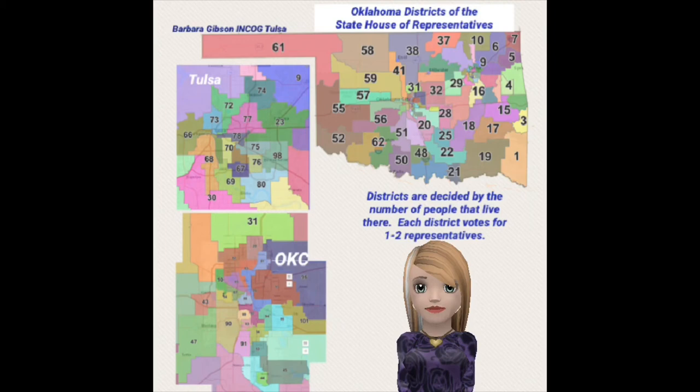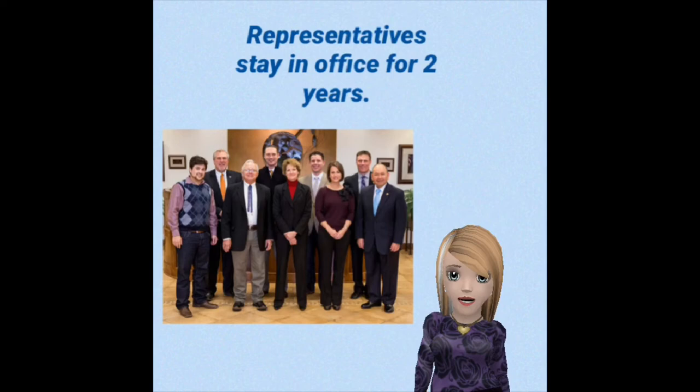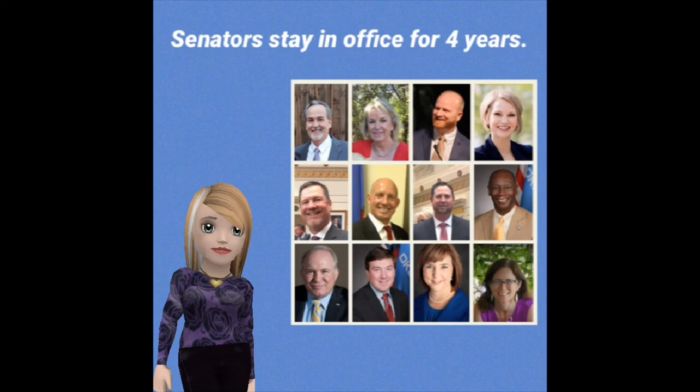Each district votes for one to two representatives. The house of representatives is the larger house. These are the districts of the Oklahoma senate. Citizens from each district vote for one senator. Representatives stay in office for two years, and senators stay in office for four years.